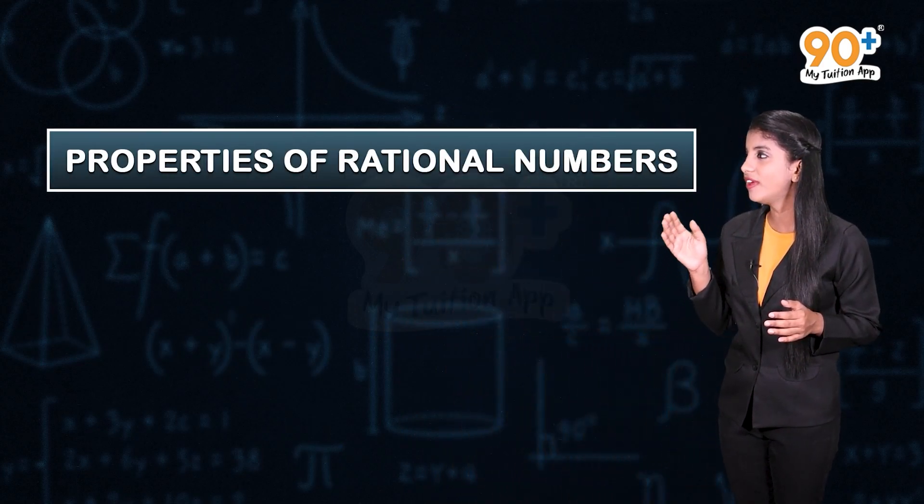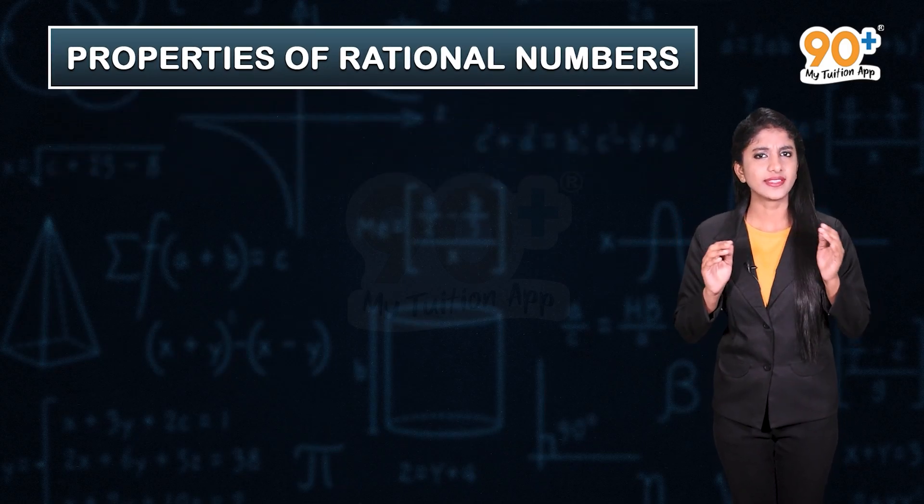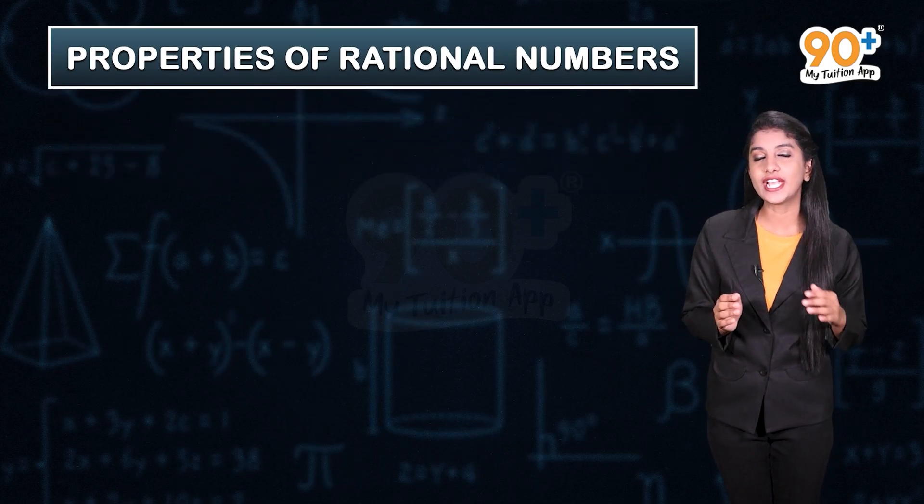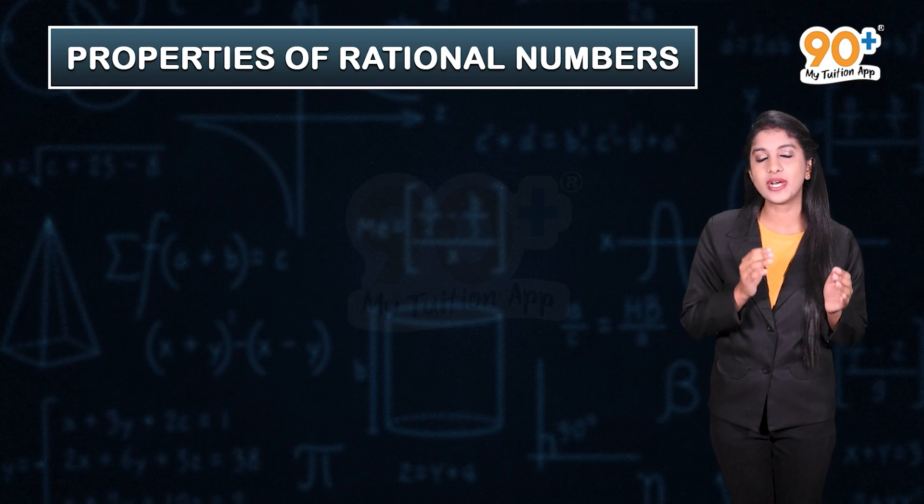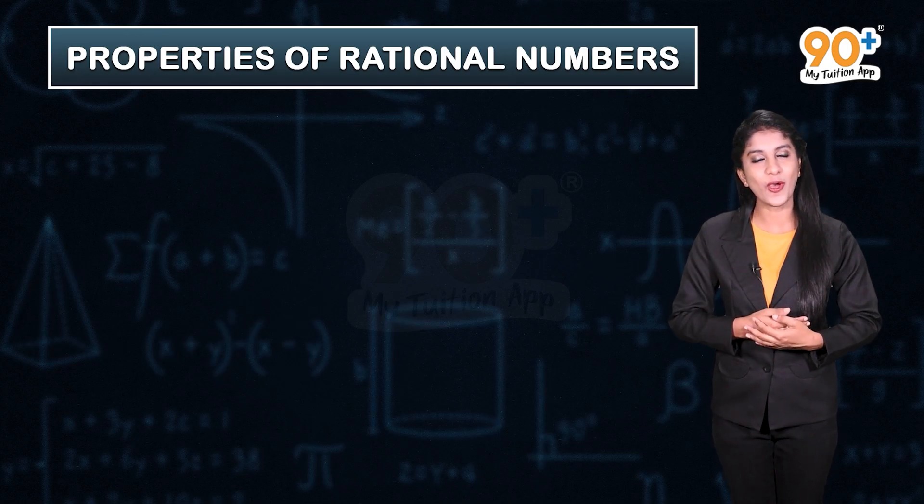We have already come across some basic operations on rational numbers like addition, subtraction, multiplication, and division. Now we are going to discuss some properties of operations on the different types of numbers we have seen so far. Let's move on to our first topic of this chapter: properties of rational numbers. In this topic we will look at how rational numbers react to the properties of operations.